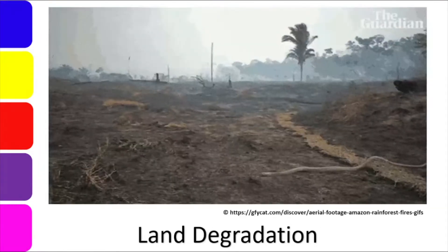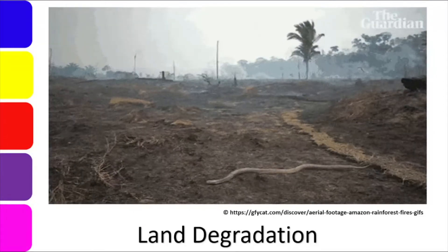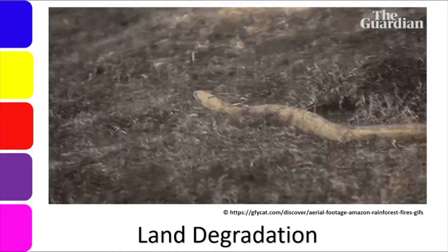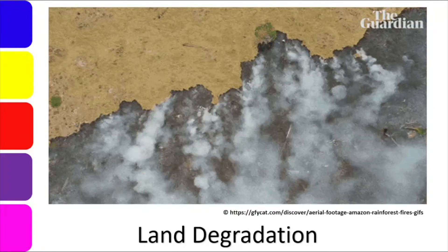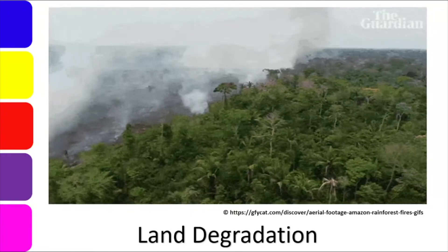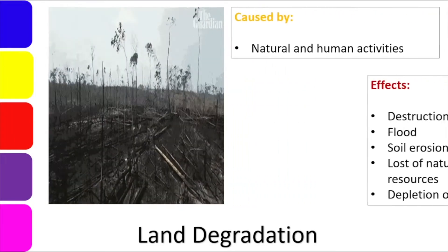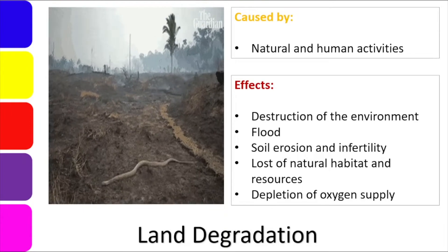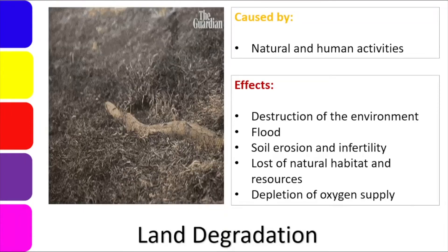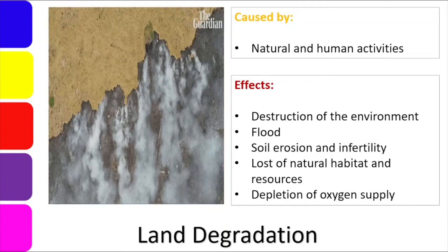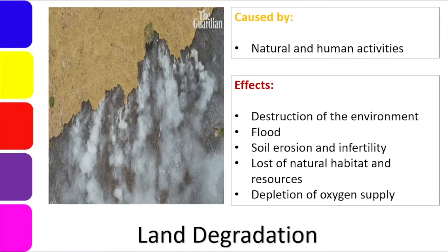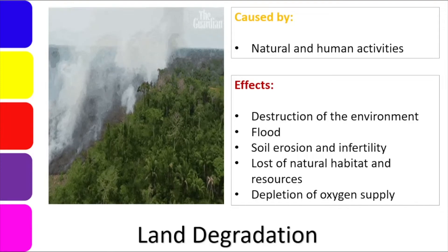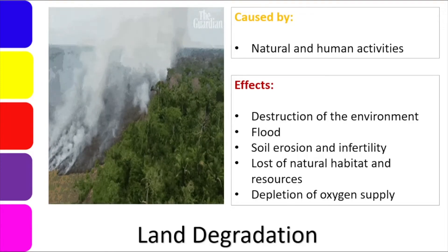Next, we have land degradation as our example. When we say degradation, it means a decline in quality. So land degradation means a decline in the quality of our land. The causes of this are natural and human activities. It can be natural — caused by nature itself, such as earthquakes and floods — but more often it is due to the actions of people, such as deforestation or the cutting of trees. So many areas, our mountains and flatlands, are becoming barren.